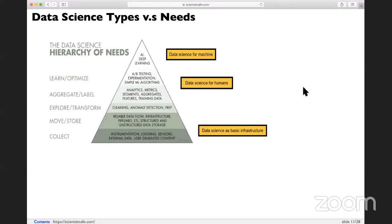If you look at data science as a hierarchy of needs, you can go from the bottom - that's data science as basic infrastructure. That's what we just talked about: the data infrastructure engineer and data engineer. Those are the engineers that laid out the basic infrastructure for everyone else.